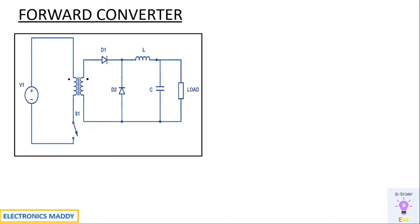This is a circuit diagram of a forward converter. It is basically a DC-to-DC converter, quite similar to a flyback converter, so it can increase or decrease the voltage at the output terminals — that is, buck or boost operation — by suitably selecting the turns ratio. How is it different from a flyback converter? It has a diode and an inductor additionally connected in this particular fashion, and the dot convention is also different.